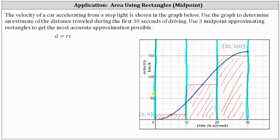We do have a problem here. Notice how the velocity is in kilometers per hour, and along the horizontal axis we have the time in seconds. So before we find the area, we need to have common units of time, which means we have to find the width of each subinterval in hours, not seconds — we'll need to convert 10 seconds to hours.